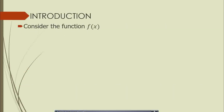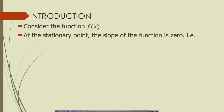Consider a function f of x. The slope of a function will be zero at the stationary point. If you get the first derivative of a function f with respect to x, that derivative will equal zero. You can also use the notation f prime of x for the first derivative. At the stationary point, the first derivative will be zero. Equating the first order derivative to zero is called the first order condition for optimization.